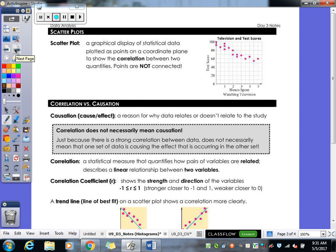Alright. Moving on to another kind of graph that we use in statistics, which is our scatter plot. We're going to deal just a little bit with scatter plots today. We're going to do more with it next class. So a scatter plot is a graphical display of statistical data plotted as points on a coordinate plane to show a correlation between two quantities. Points are not connected. That's why it's called a scatter plot. You have points scattered all across the graph that you're not connecting. You're not trying to connect the dots and make a pretty little picture here. It's meant to be random.